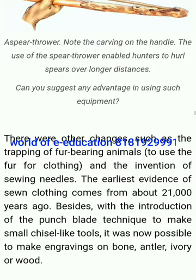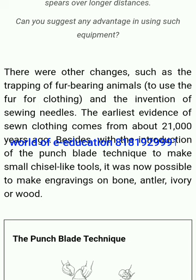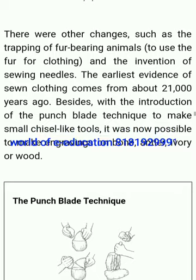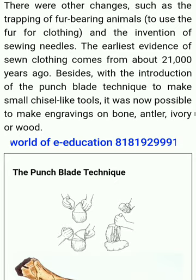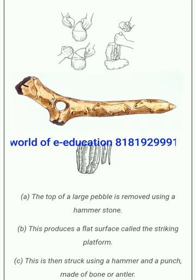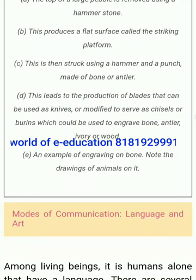There were other changes, such as the trapping of fur-bearing animals to use fur for clothing and the invention of sewing needles. Earliest evidence of sewn clothing comes from about 21,000 years ago. With the introduction of the punch blade technique to make small chisel-like tools, it was now possible to make engravings on bone, antler, ivory or wood. The punch blade technique involves: first, the top of a large pebble is removed using a hammer stone to produce a flat surface called the striking platform; then this is struck using a hammer and a punch made of bone or antler, leading to the production of blades that can be used as knives or modified to serve as chisels or burins for engraving.